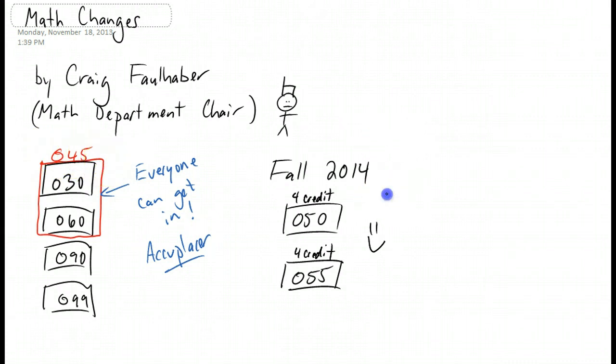However, starting fall 2014, not everyone can get into math 050. That's a really big deal. Looking at our Accuplacer data from fall of 2013, there were 270 students that would not have tested into our lowest level math class, math 050.